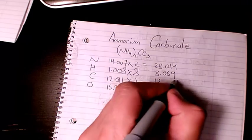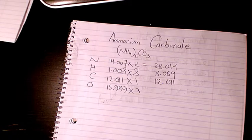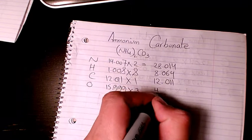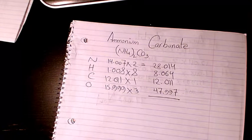You add them all, that will be 96.086 grams per mole. So that's the molecular weight or molar mass of ammonium carbonate.